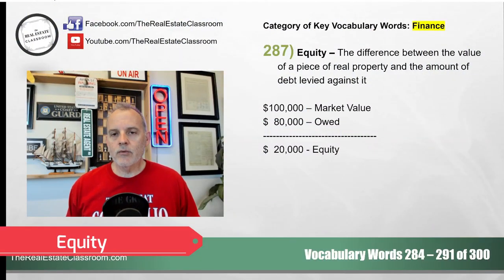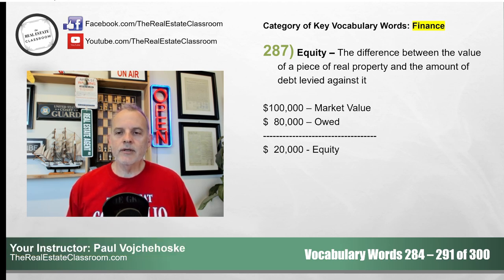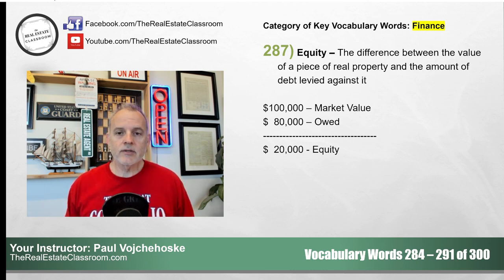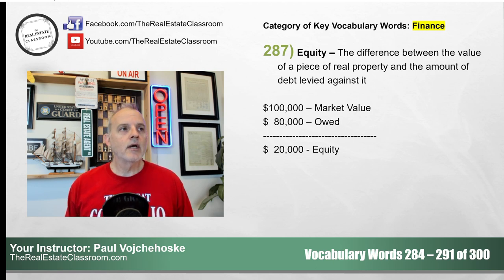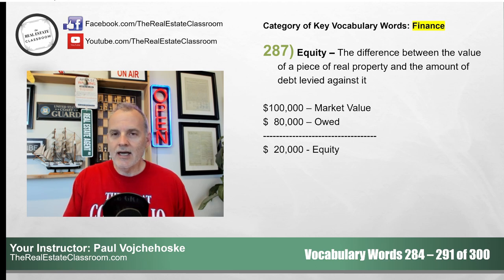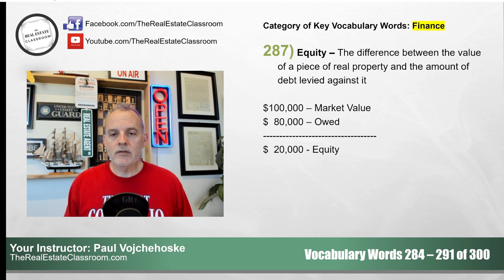287 — let's talk about equity. Equity is a common term in the real estate business. It's simply the difference between the value of a piece of real property and the amount of debt levied against it. The simplest example: the market value of your home is $100,000 and you have an $80,000 mortgage owed — your equity is 20% or $20,000. It can be stated as a dollar amount or a percentage.